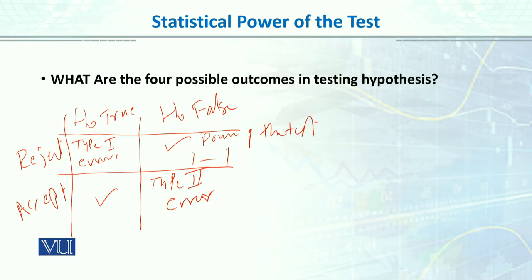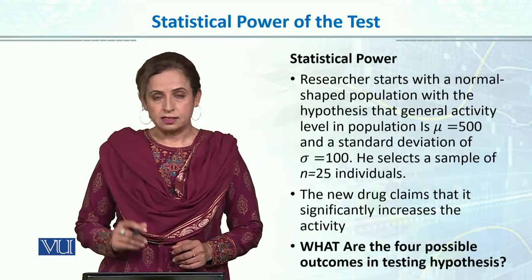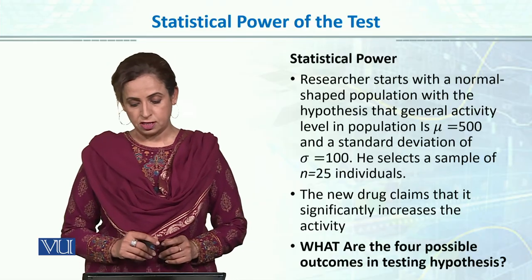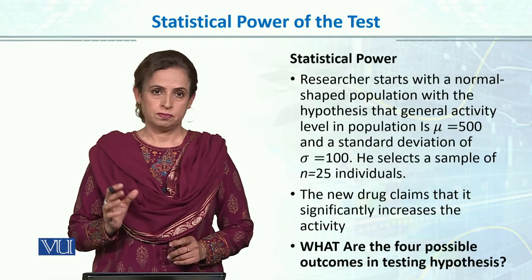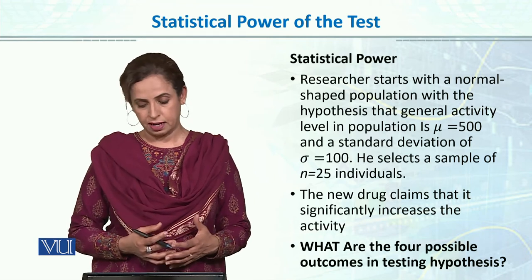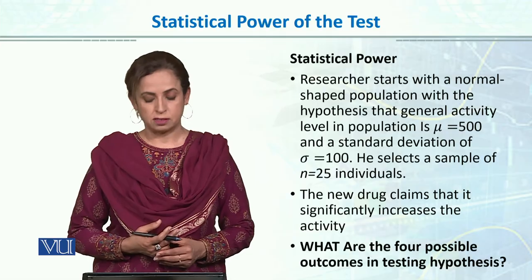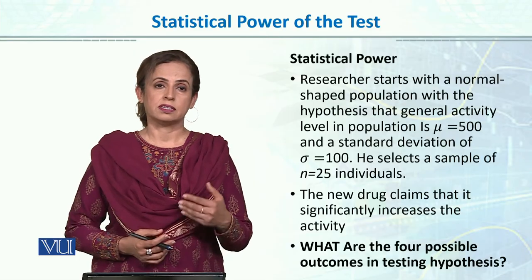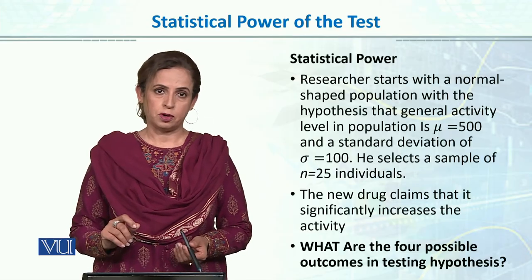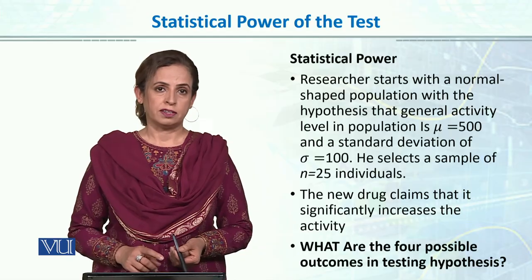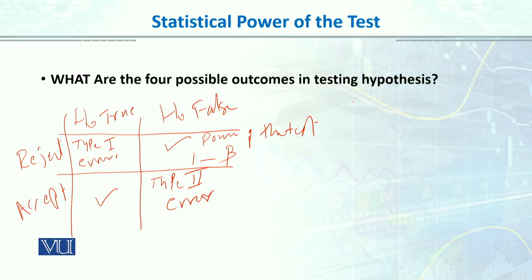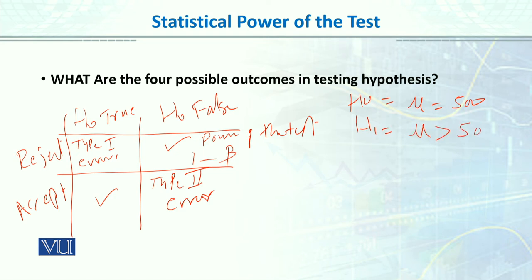Power of the test equals 1 minus beta. Let's move to an example: a researcher starts with a normal-shaped population with the hypothesis that the general activity level in the population is 500 on a questionnaire instrument. The standard deviation is 100 and the sample size is 25. There is a new drug claimed to significantly increase activity level, so we test whether the new drug actually increases activity. Our null hypothesis is mu equals 500, and our H1 is mu greater than 500.